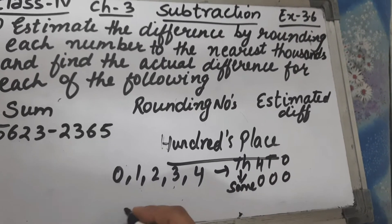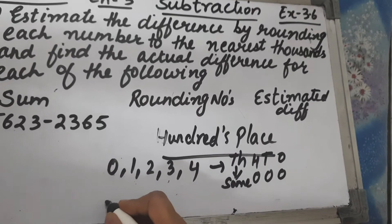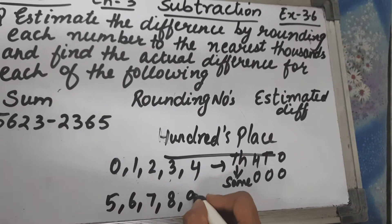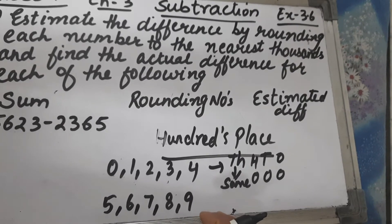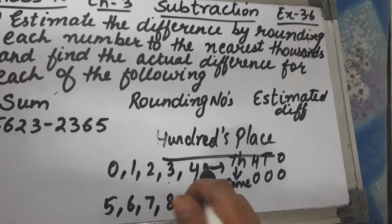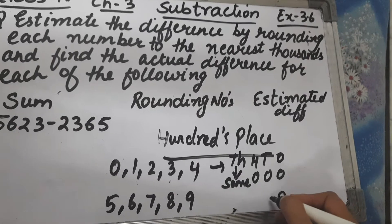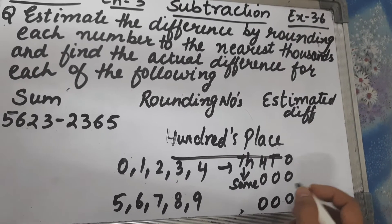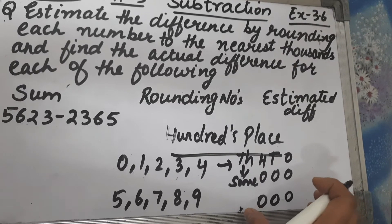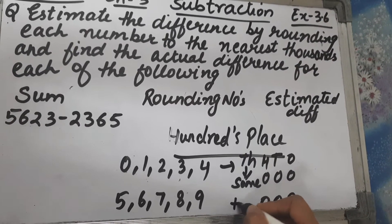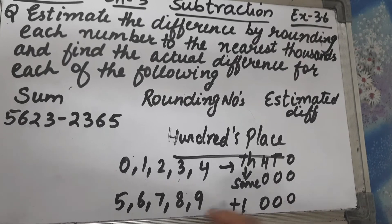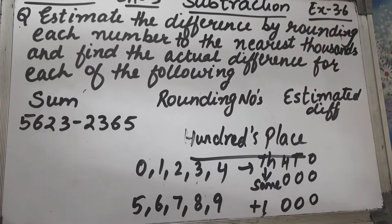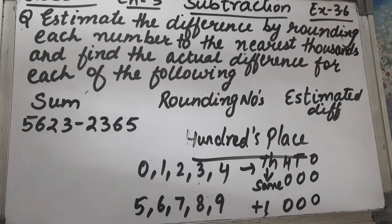But if your hundreds place is 5, 6, 7, 8, or 9, then your ones, tens, and hundreds place will become zero and we will add one to the thousands place. This is how we round off a number to the nearest thousand.